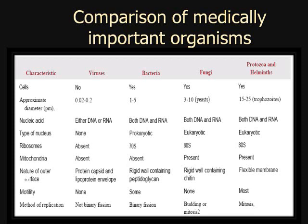Let's begin with cells. Viruses have no cells. Bacteria, fungi, and protozoa and helminths all have cells. For approximate diameter: viruses are 0.02 to 0.2 micrometers, bacteria are 1 to 5 micrometers, fungi are about 3 to 10 micrometers — noticeably larger than bacteria. Protozoa and helminths, as a great example of eukaryotes, range from 15 to 25 micrometers. As the organism gets larger, it becomes more complex and more eukaryotic.